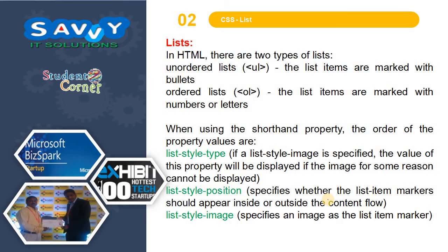In the unordered list, the list items are marked with bullets, while ordered lists use numbers or letters. When using the shorthand property, the order of property values are: list-style-type, list-style-position, and list-style-image. List-style-type specifies the marker type if no image is set. List-style-position specifies whether the list item markers should appear inside or outside the content flow.